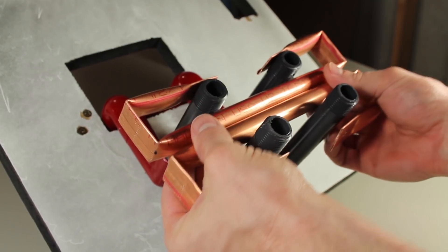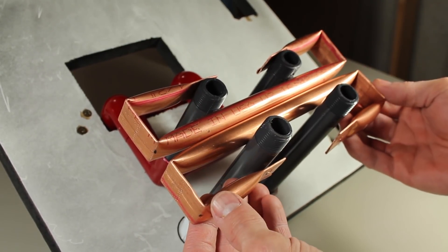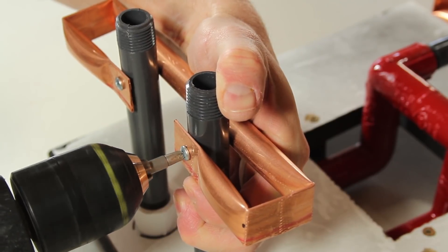Now the second electrode can be added, adjusting it so it's the same height as the first, and of course two more screws will fix the copper in place.